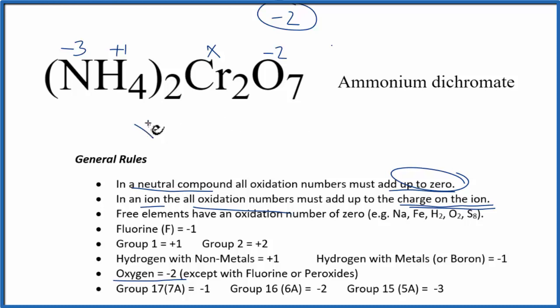Set up another equation. We have X for chromium, but we have two of those. So 2X plus we have seven oxygens. Each one is minus two oxidation number. That's going to equal the charge on the ion, minus two. Now we're just solving this equation. So 2X minus 14. Let's add 14 to both sides. So 2X equals 12. Then X, we divide both sides by 2. X equals 6. That's the oxidation number on the chromium.